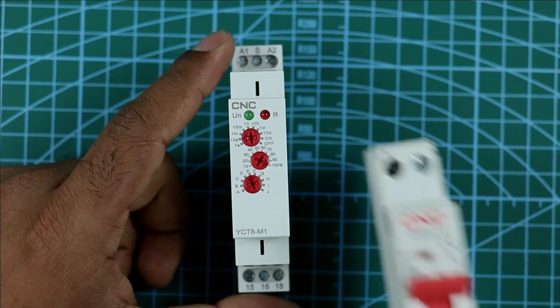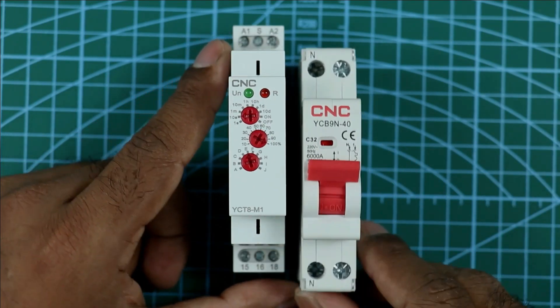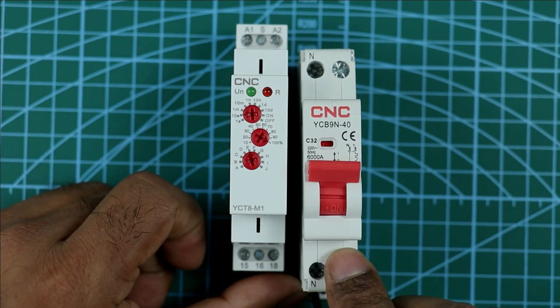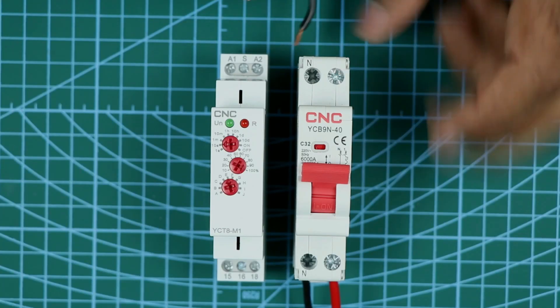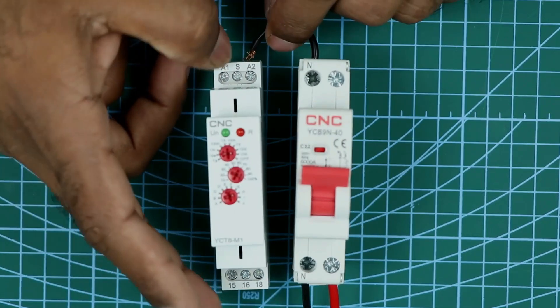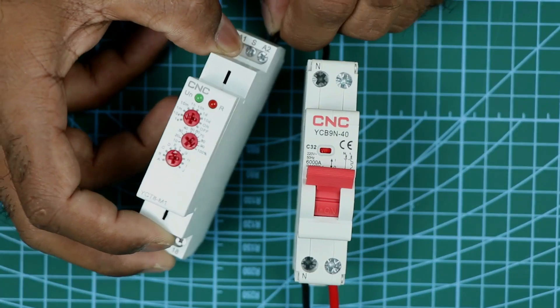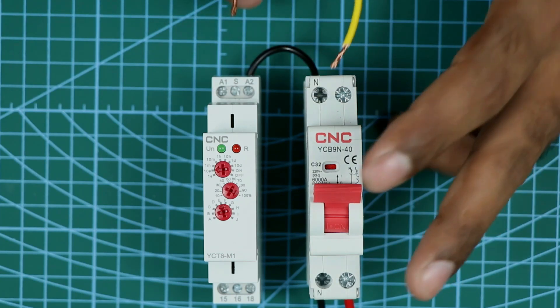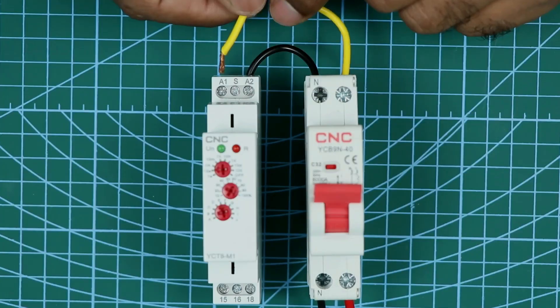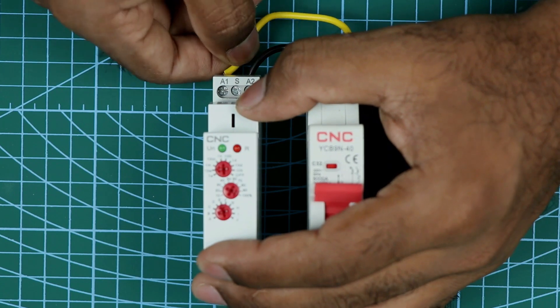For now, what I will do is I am taking this two-pole MCB, and through this MCB we will provide power supply to the timer. At the neutral terminal of MCB, connect one end of a wire. Other end of the wire is to be connected at A2 terminal of the timer. Now for phase supply, connect one end of wire with MCB and other end of the wire is to be connected with A1 terminal of timer.